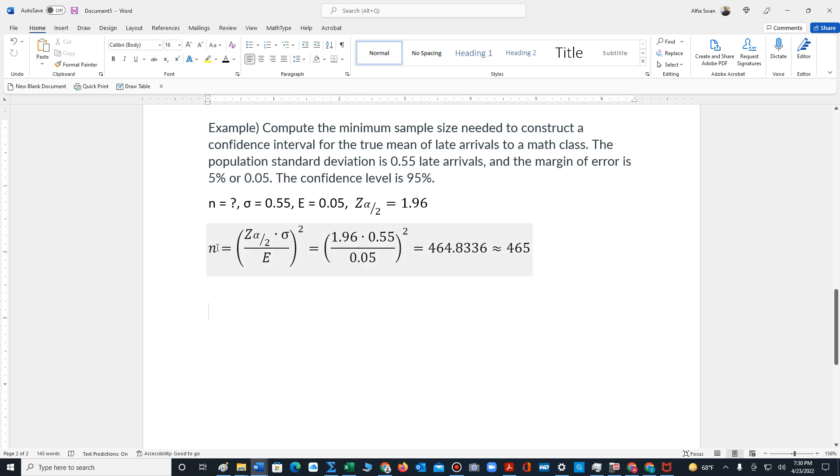That informs us that we're trying to find a value for n, a minimum value for n, needed to construct a confidence interval for the true mean of late arrivals to a math class.